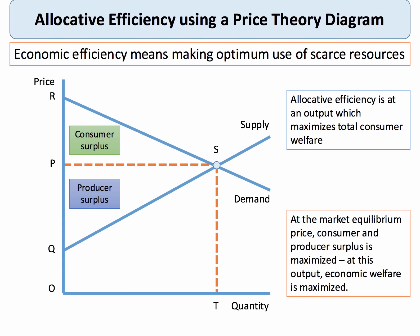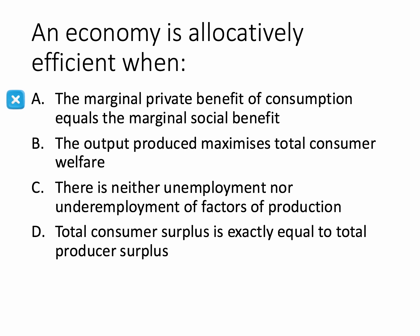Allocative efficiency is one of the types of efficiency. Generally, efficiency means making optimum or best use of our scarce resources. In a competitive market, allocative efficiency is the output where total consumer and producer surplus is maximized at the equilibrium price. So allocative efficiency is essentially trying to make best use of scarce resources to maximize consumer welfare from consumption of goods and services.